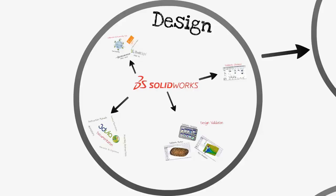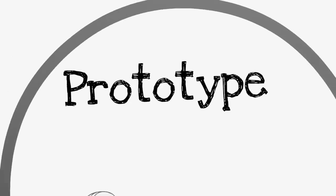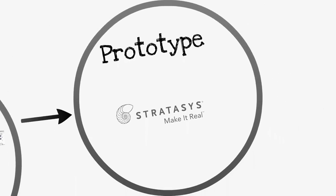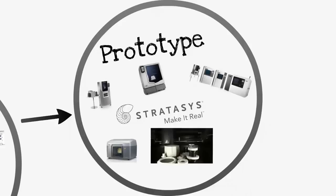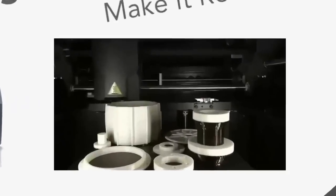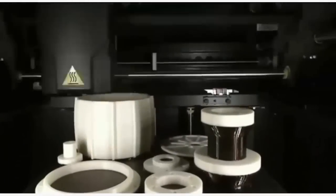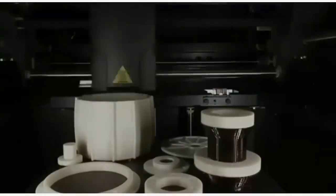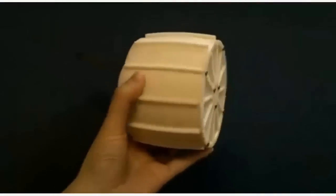Once you are satisfied with your design, it is time to create a physical prototype. CAD Dimensions has partnered with Stratasys, the industry leader in additive manufacturing technology. With products like Mojo, Dimension, Uprint, and Fortus, Stratasys can fit the needs of any size company. Rapid prototyping will allow you to quickly check your design for fit, form, and function without having to invest in expensive molds or machined metal components.